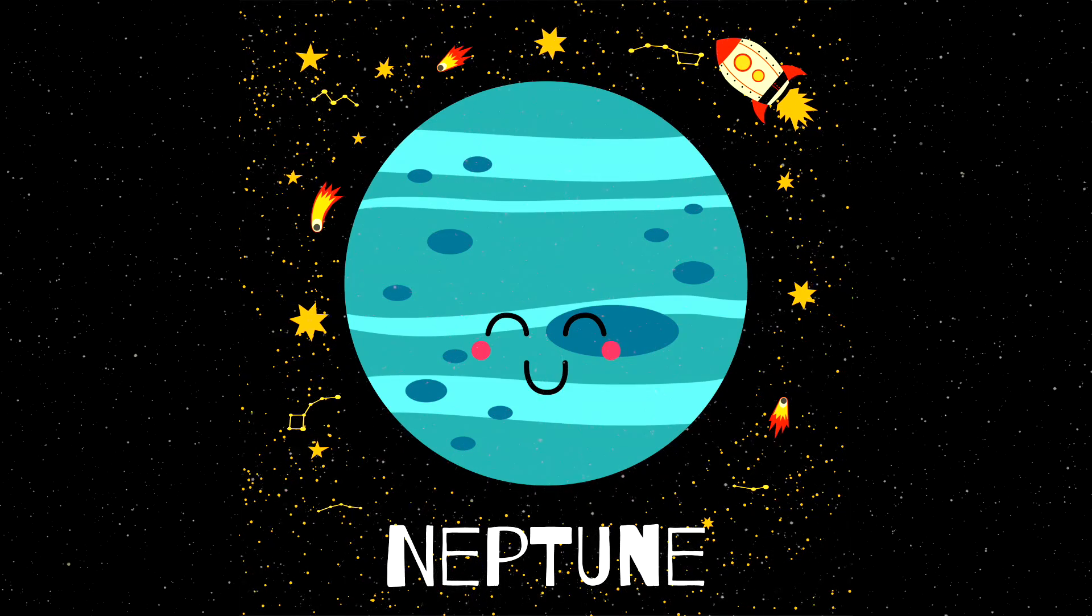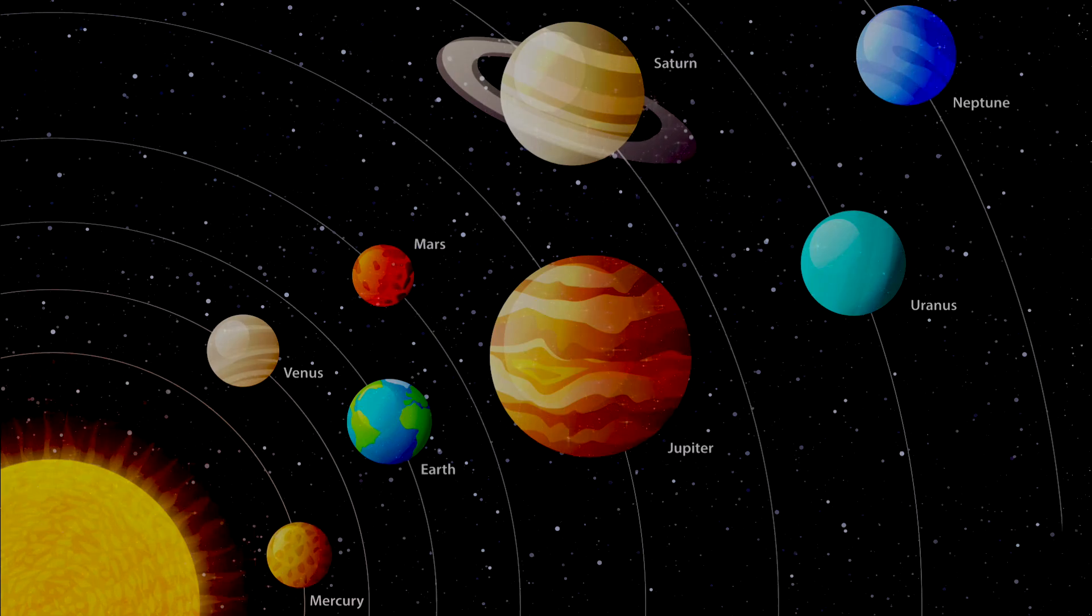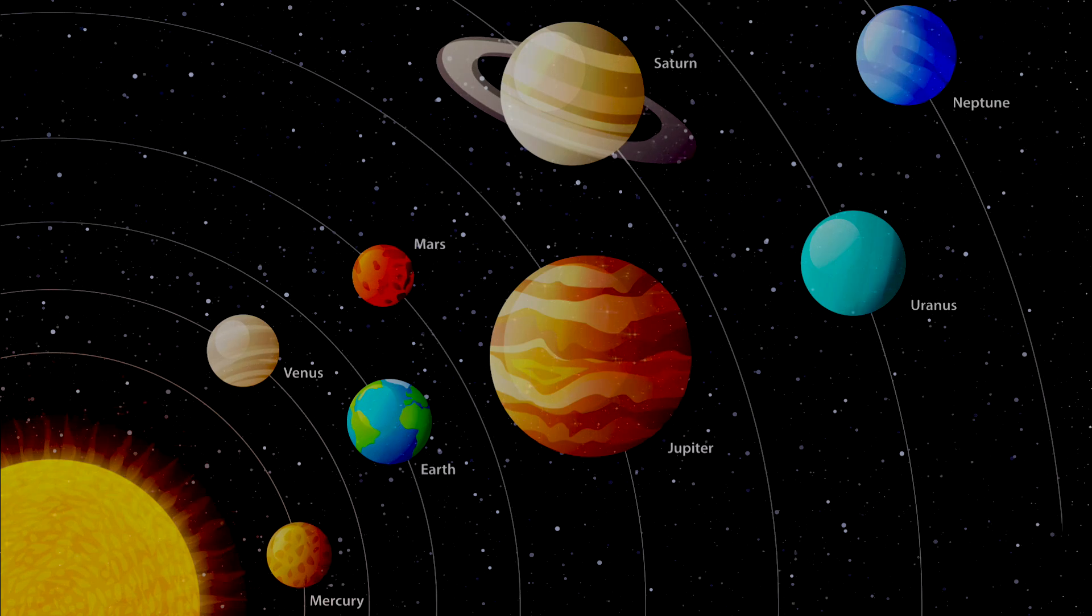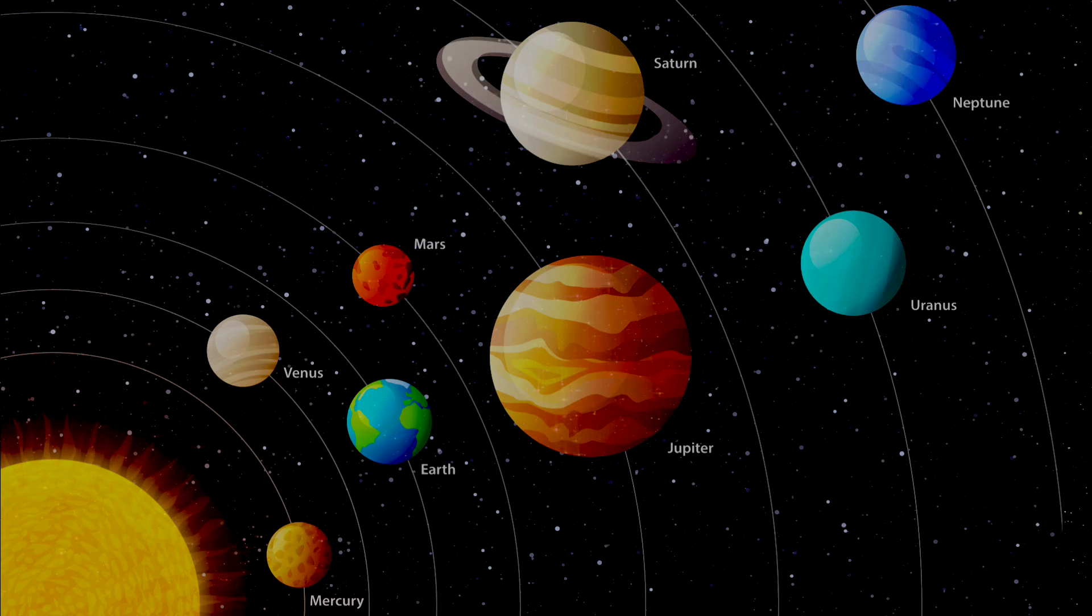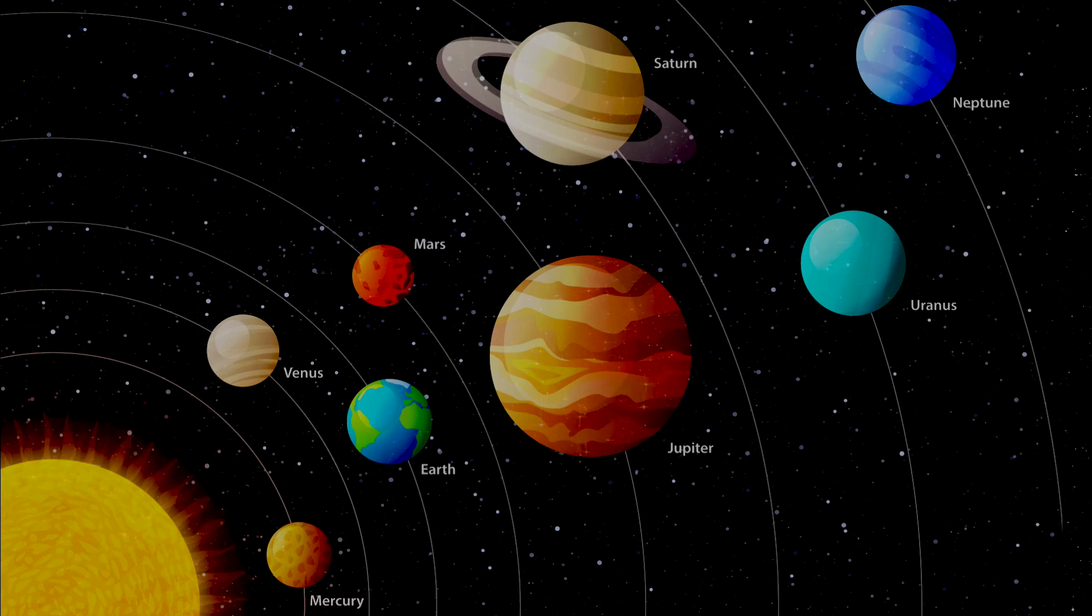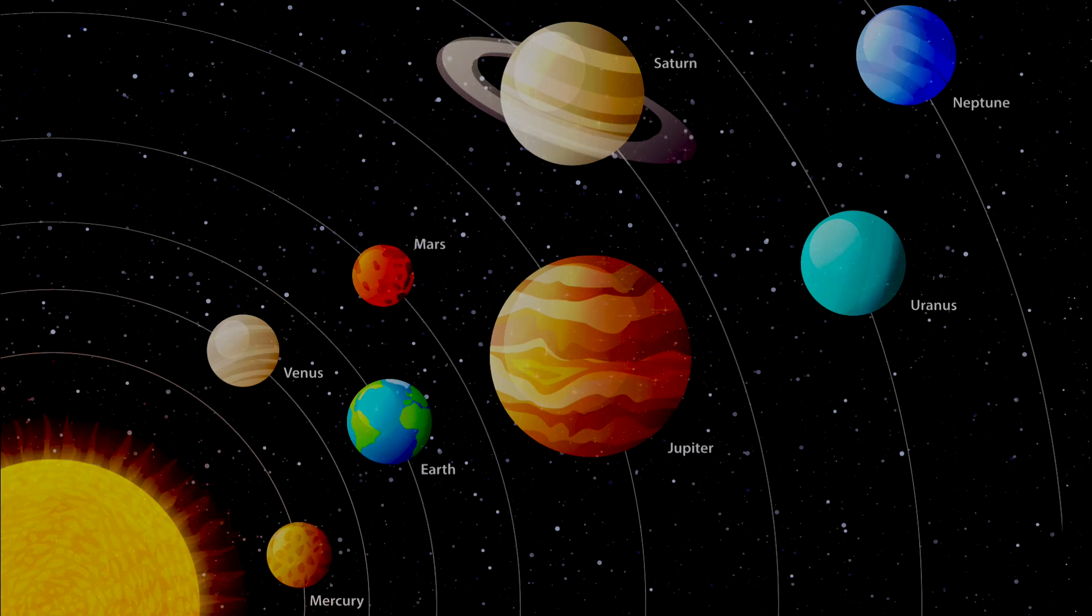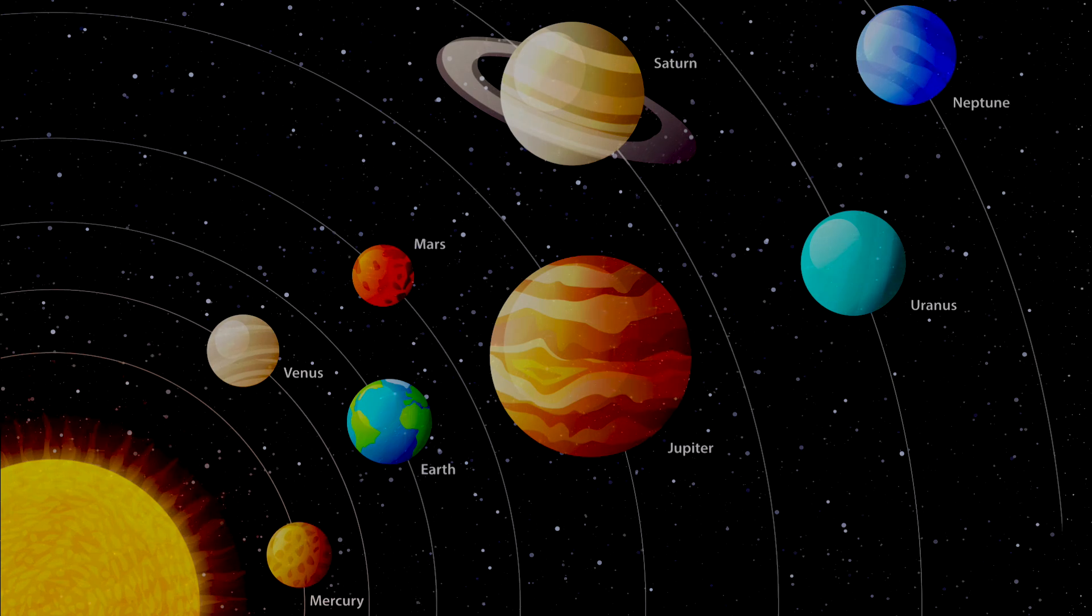The biggest planet is Jupiter, Mercury is the smallest one. Mercury is the nearest, Neptune furthest from the Sun.